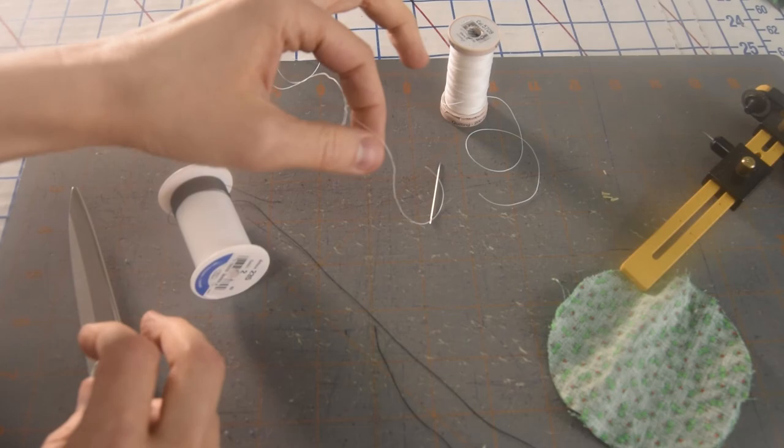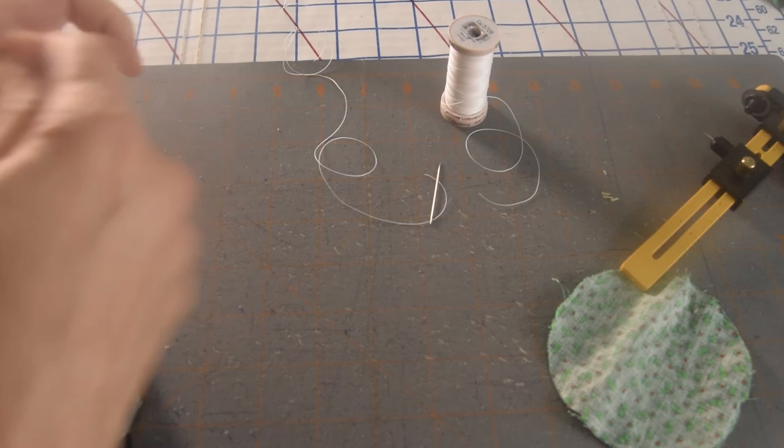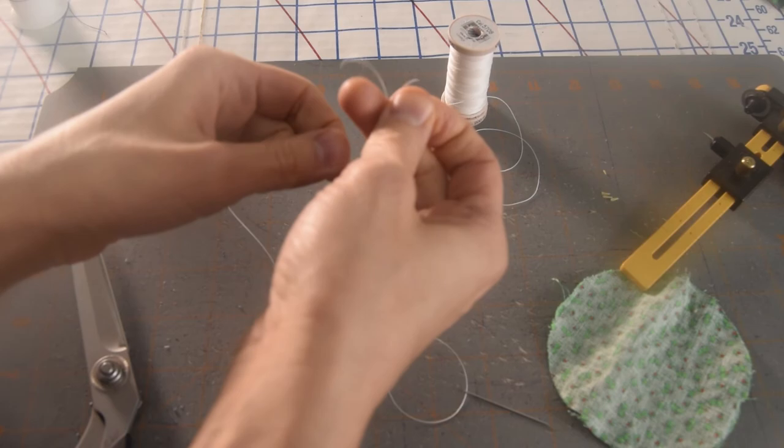And when this stuff comes off the roll, it's got a lot more body. It kind of curls on itself, but it's a lot stronger. And there's a lot of stress on the gather part of yo-yo. So the hand quilting thread just works a lot better.